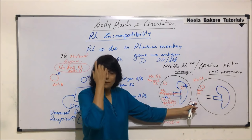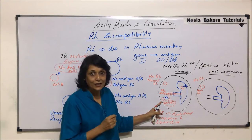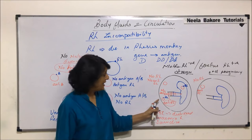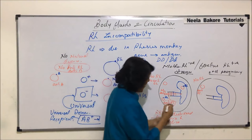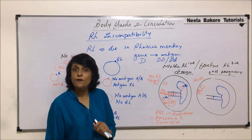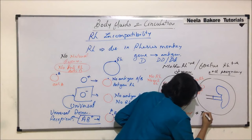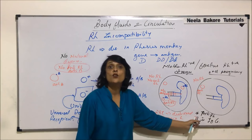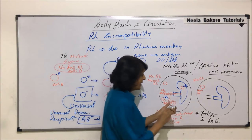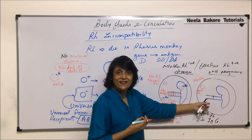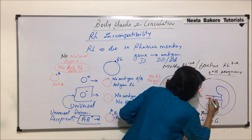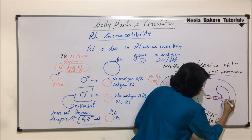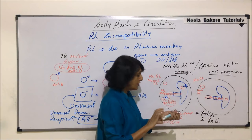The change from the first situation is only in the antibody — RBCs are the same. But here, anti-RH is now present in the mother's body. And importantly, this anti-RH is IgG type of antibody. We know that IgG crosses the placental barrier. So when the second pregnancy begins, as soon as the female conceives, the anti-RH antibody crosses the placenta and enters the body of the fetus.